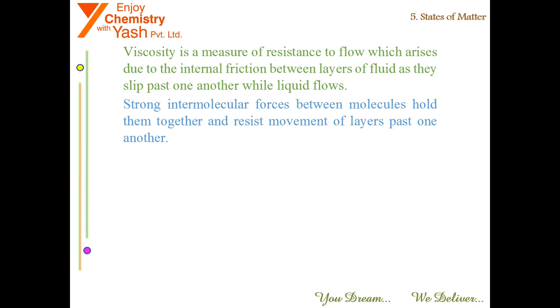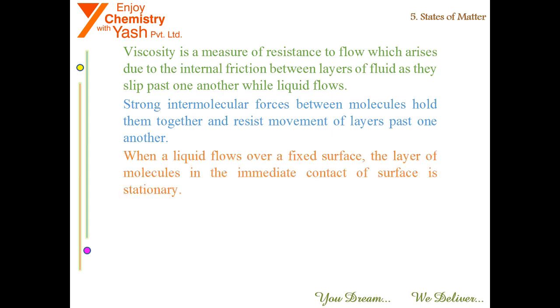When a liquid flows over a fixed surface, the layer of molecules in immediate contact with the surface is stationary. The velocity of upper layers increases as the distance of layers from the fixed layer increases.